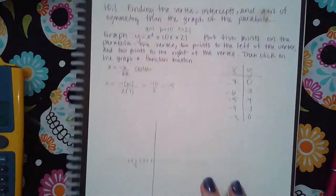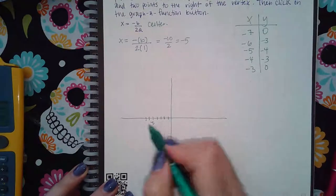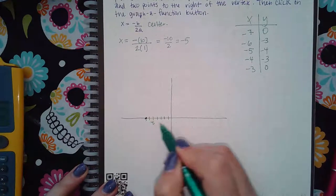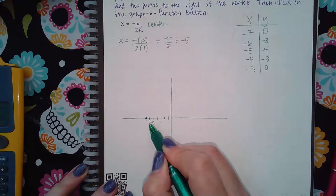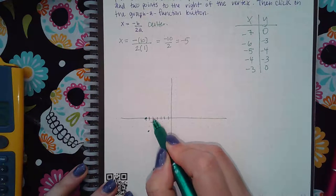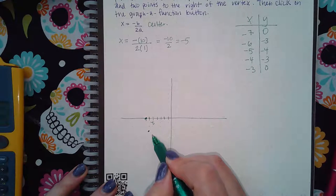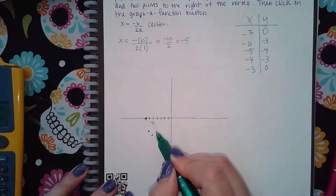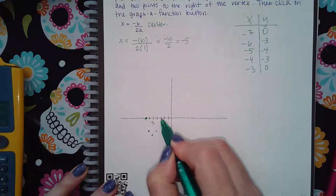And so then I just plot these points. So I have negative 7 and zero, negative 6 and negative 3, negative 5 and negative 4, negative 4 and negative 3, and then negative 3 and zero.